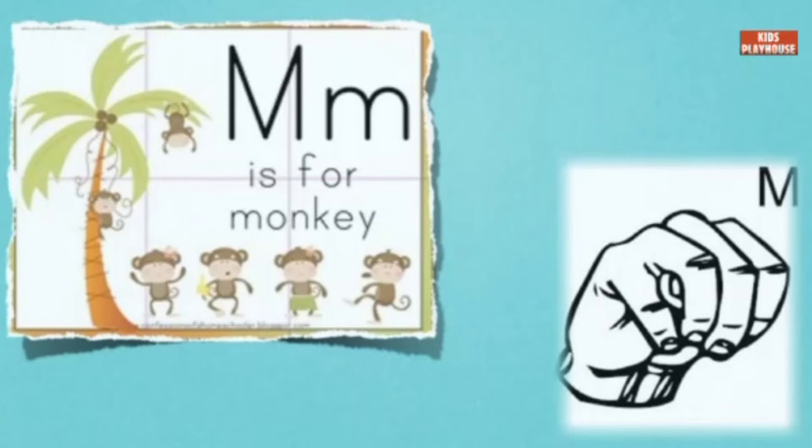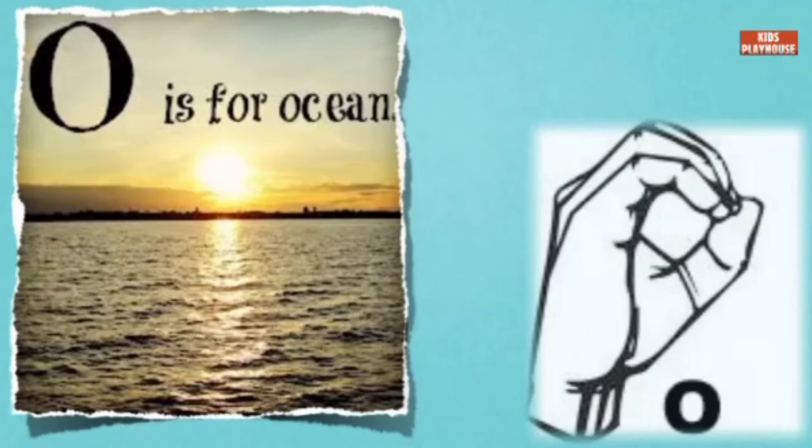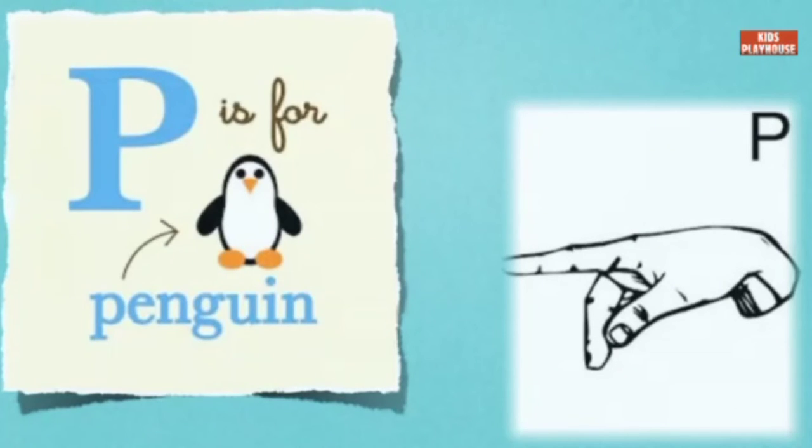M is for Monkey. N is for Nest. O is for Ocean. P is for Penguin.